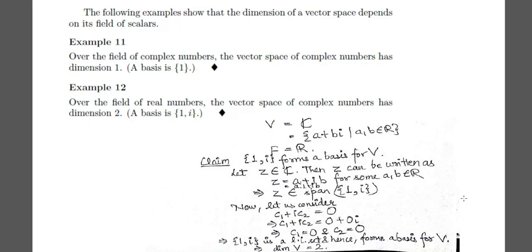The dimension of a vector space depends on its field of scalars. If the field is the complex numbers and the vector space is also ℂ, then a basis is {1}, giving dimension 1. But if the field is the real numbers and the vector space is ℂ, then a basis is {1, i}, so any element can be expressed in terms of 1 and i, giving dimension 2.